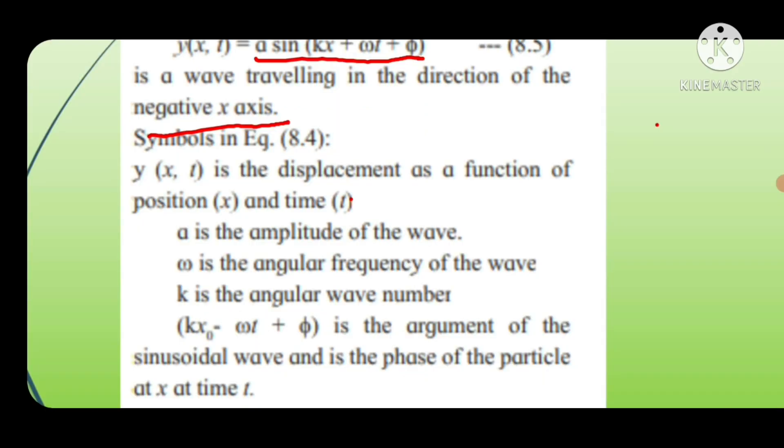Symbols in equation 8.4: y(x,t) is the displacement as a function of position x and time t. a is the amplitude of the wave. ω is the angular frequency of the wave, and k is the angular wave number. (kx - ωt + φ) is the argument of the sinusoidal wave and is the phase of the particle at x at time t.